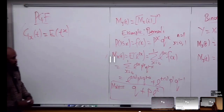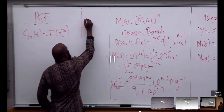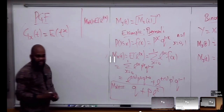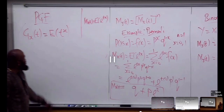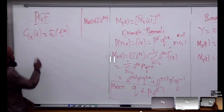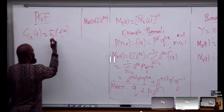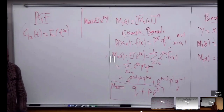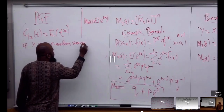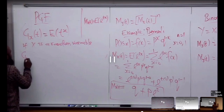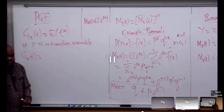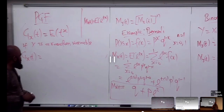Can we see the difference between the moment generating function and the PGF? The moment generating function m_X(t) involves the exponential raised to power tX, but the PGF is the expected value of T raised to power X. We can only use the probability generating function for discrete random variables — we don't use it for continuous.